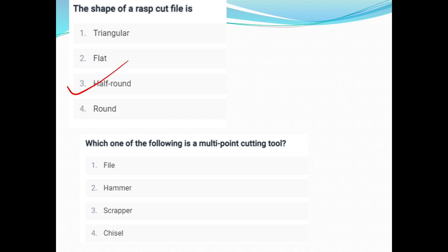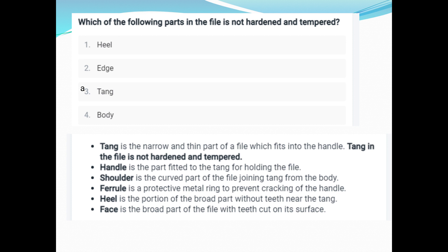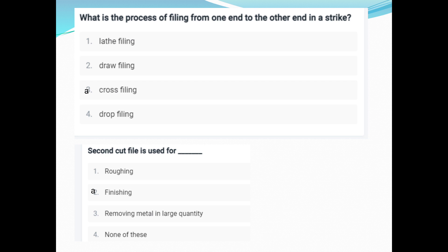A file is a multi-point cutting tool. Which part of the file is not hardened and tempered? The tang is not hardened and tempered. It is the narrow thin part fitted into the handle. Shoulder is curved, ferrule is a protective ring, heel is the broad part without teeth, and the face is the broad part where teeth are cut on the surface.